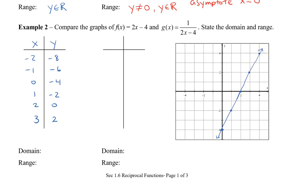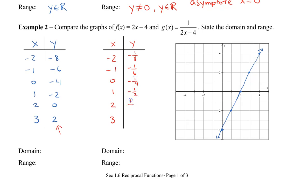We're going to use the same x values. Because g of x is the reciprocal of f of x, I can take the y values from my first table and take the reciprocal of those values. So we get negative 1 eighth, negative 1 sixth, negative 1 fourth, negative 1 half, 1 over 0 which is undefined, and then 1 third.